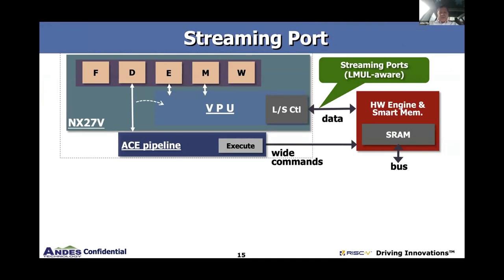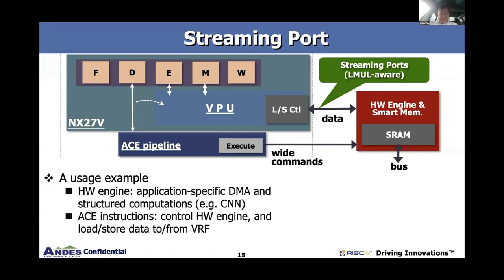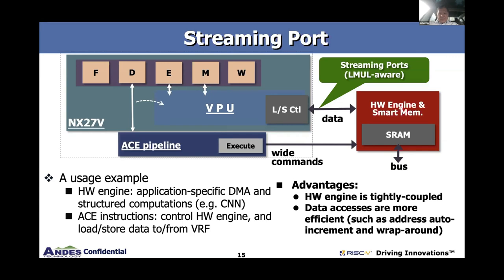How we create that is with something called a streaming port. Basically, we create a custom data port with a custom data memory to an external hardware engine — whether that's a neural network accelerator, video codecs, or any codecs. The neural network accelerator seems to be running well. The data bus could be AXI model aware or VLAN aware; it could be as wide as you need, as fast as you need. Through the ACE pipeline, we create custom instructions to control the external hardware accelerator, creating a hardware application-specific DMA and memory location.